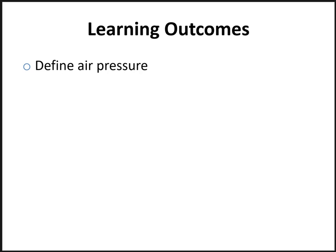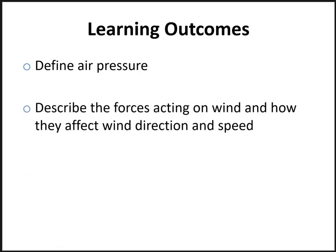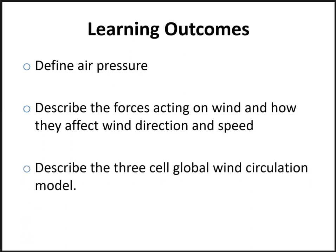On that note, let's jump in. Outcomes for this lecture are: one, you should be able to define what air pressure is; you should be able to describe the forces acting on wind and how they affect wind direction and speed; describe the three-cell global wind circulation model; and finally describe the upper air circulation system.